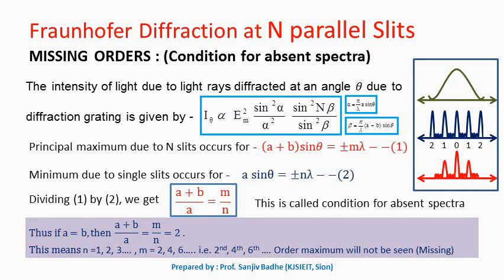Now, it may happen for a particular value of A and B that the maximum due to combined effect of n number of slits will coincide with the minimum due to single slit. In this case, this product—maximum multiplied by zero—will result in zero intensity. Therefore, we expect a maximum here due to combined effect of n number of slits, but because the minimum of single slit falls exactly at the same point, that maximum is not seen.